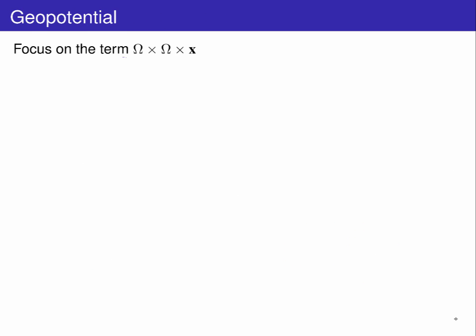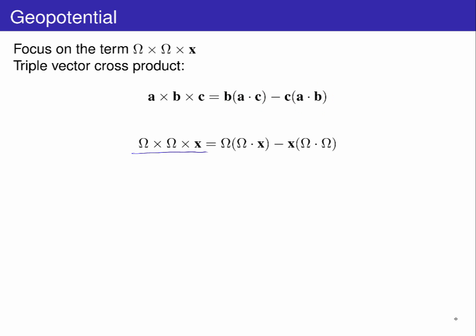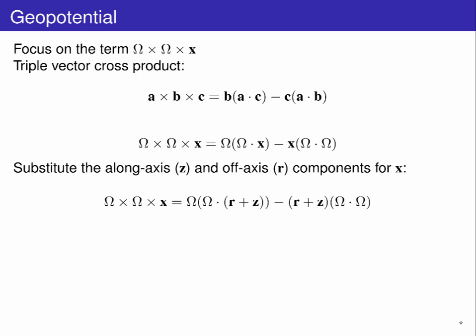Let's first look at the centripetal term. From vector calculus relations, a triple-vector cross-product can be expanded like so, giving the difference of two dot products. For the centripetal term, this becomes omega outside of omega dot x minus x outside of omega dot omega. Next, we substitute the along axis z and off axis r components for x.